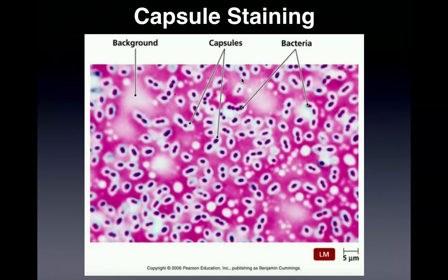So when you look at these stains, you'll have a background — this kind of light pink that you see everywhere. The actual bacteria are the dark purple. So anywhere we see a purple dot, those are going to be the bacteria themselves. But what you notice in this image is that all of these cells, these bacteria where you see the purple dots, are surrounded by what we call a halo — a white, colorless area that surrounds the cell itself. That halo is the capsule, and it's a negative stain because we're not actually staining the capsule; we're just staining everything else. The structure we're looking for is not colored, not stained.